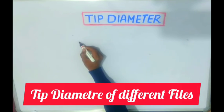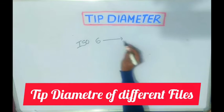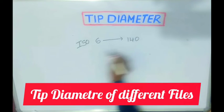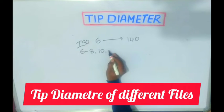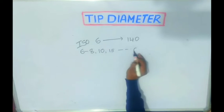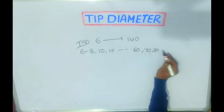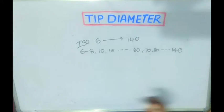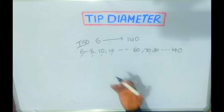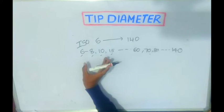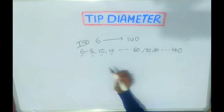According to ISO standardization, we have instruments ranging from 6 to 140 — 6, 8, 10, 15, and so on up to 16, 17, 18, and so on to 140. So when I say a 6, 8, 10, or 15 number file, does it have any meaning? Why do they call it 6, why 10, and why 15?